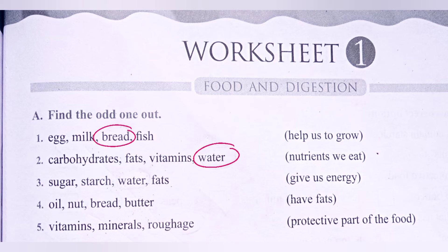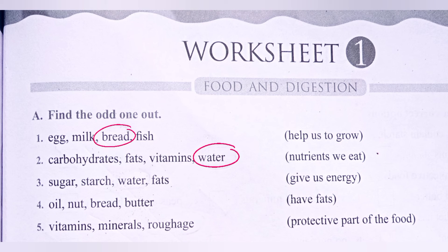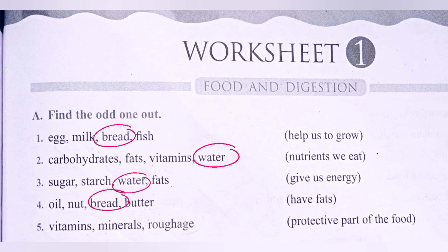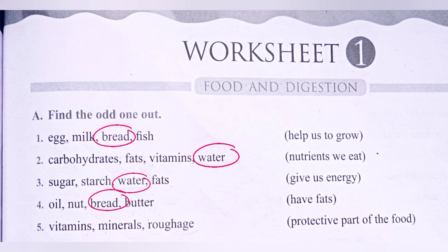Third one: sugar, starch, water, and fats. The hint box says 'give us energy.' Sugar, starch, and fats give us energy, so water is the odd one out. Fourth one: oil, nut, bread, and butter — all have fats, so the odd one out is bread. Fifth one: vitamins, minerals, roughage — the hint box says 'protective food,' so roughage is the odd one out.